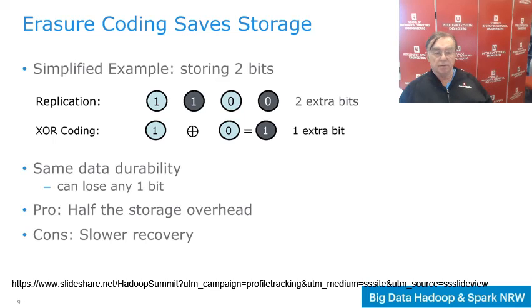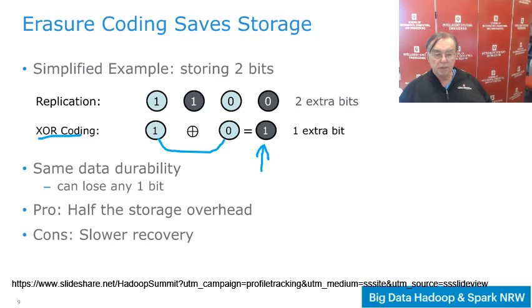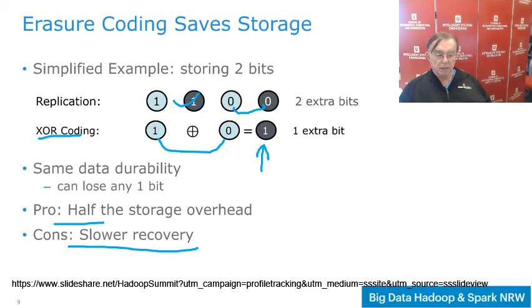An example of erasure coding: suppose we store two data bits, one and zero, and also store their exclusive-OR, which is one in this case, or zero for zero XOR zero and one XOR one. This one extra parity bit can act as a backup to these two bits, whereas with replication you would need two extra bits to back up two bits. So you have effectively the same data durability — you can lose any one bit — but you have reduced storage from four bits down to three. The trade-off is slower recovery because you have to perform the erasure computation.